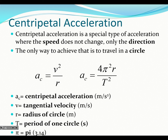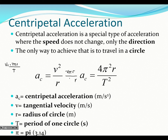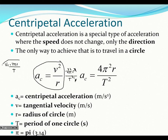These two formulas are related. If you take vc equals 2 pi r over T and square it, you get 4 pi squared r squared over T squared, then divide by R. The r squared over R gives just R, so you end up with 4 pi squared R over T squared. This second formula is just a combination of the first centripetal acceleration formula and the circular velocity formula merged together.